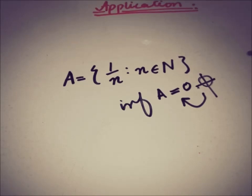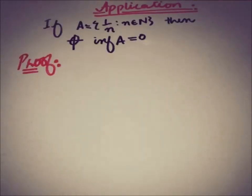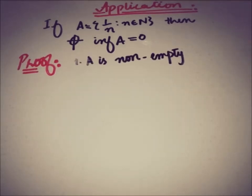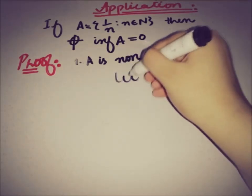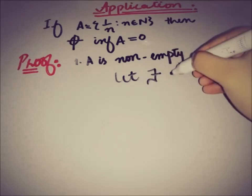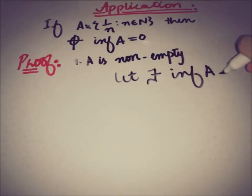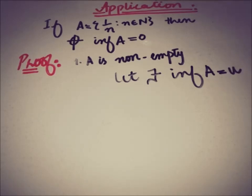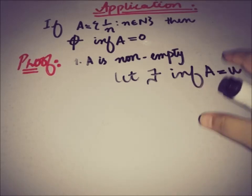Let's start the proof. First, A is a non-empty set — this is extracted from the given information. Since A is non-empty, we can talk about its infimum. Let the infimum of A exist and name it u, so infimum of A = u.